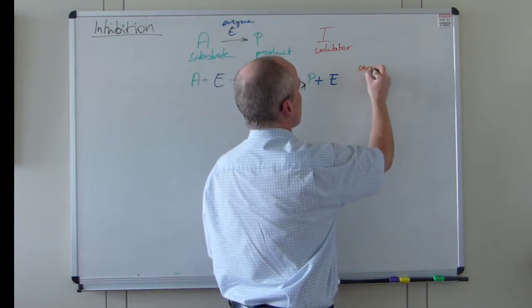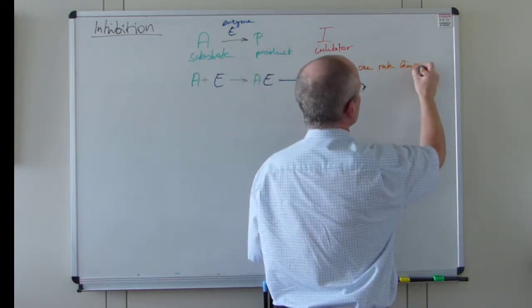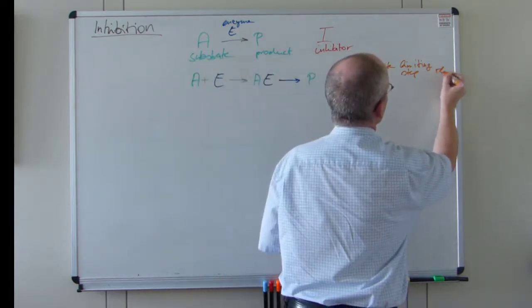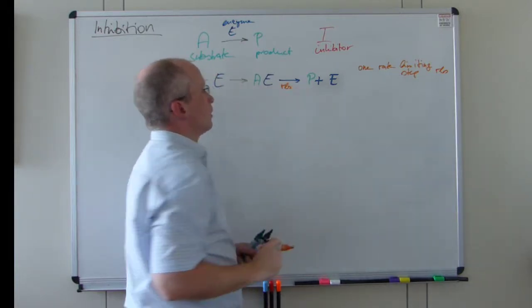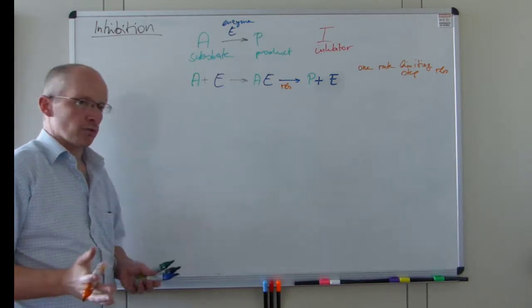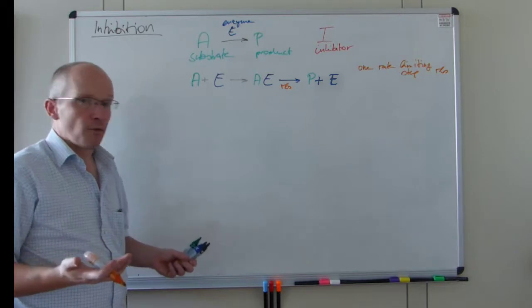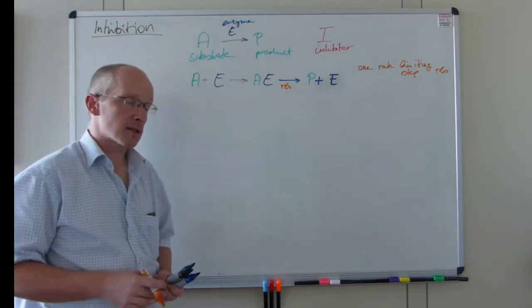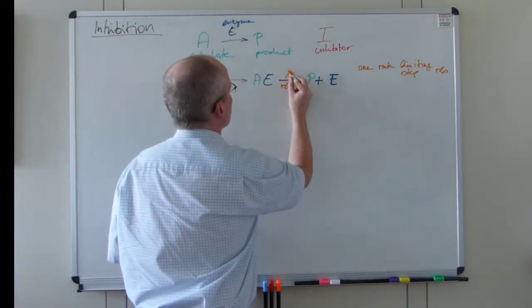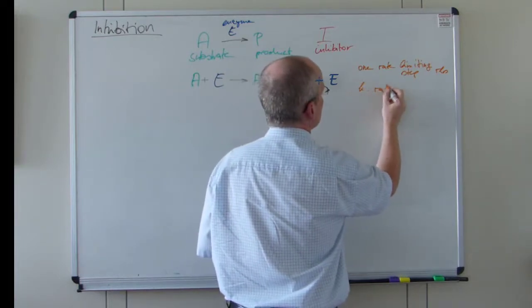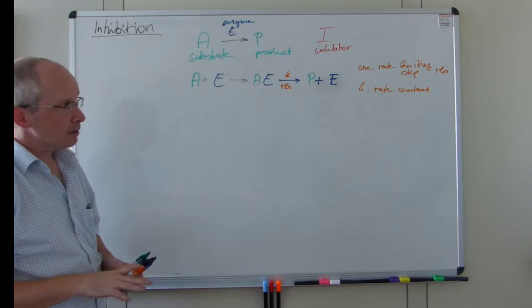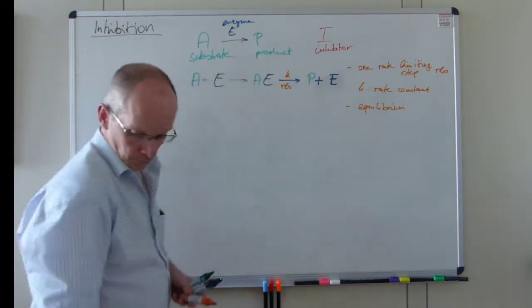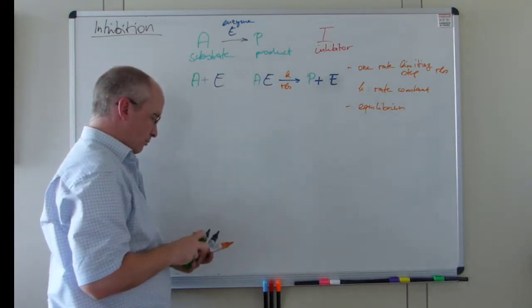So we will apply the principles — what do we need? We need one rate-limiting step, and I will choose this one. We will see in further examples that the choice of course makes a difference in what you get as a rate equation, but they are all valid. So there is no real guideline other than experience as to which step to choose as the actual limiting step. For that we will then get a rate constant.